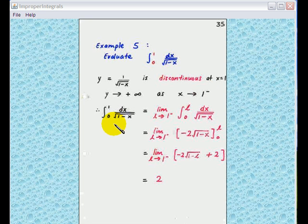Now because this is an improper integral, you have to replace the point 1 by L and let L go to 1 minus.